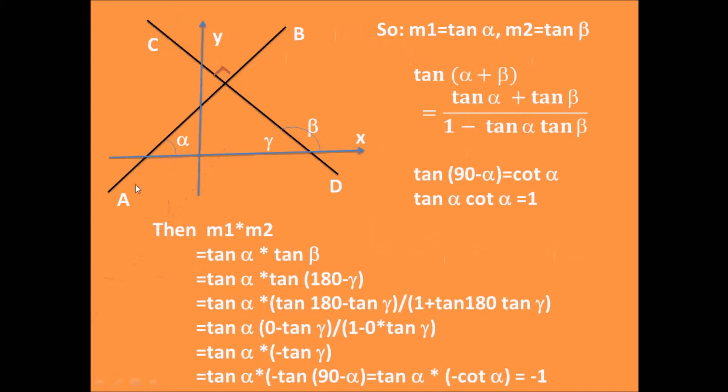Here we have two lines AB and CD. They are perpendicular to each other, and the line AB has an angle α and the line CD has an angle β. So, the line AB has a slope m1 equals tangent α and line CD has a slope m2 equals tangent β.